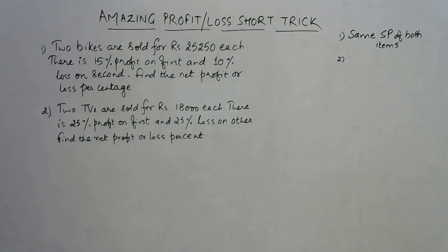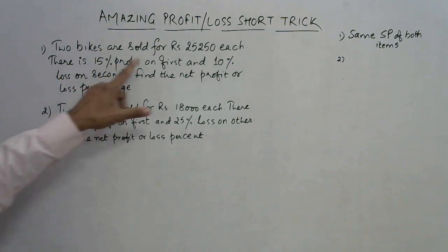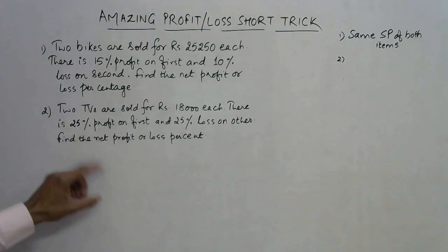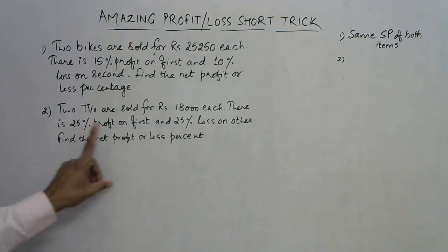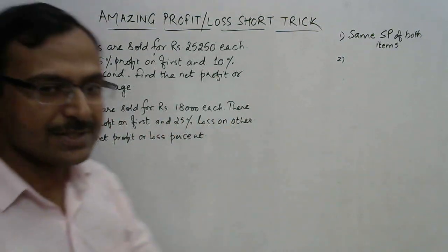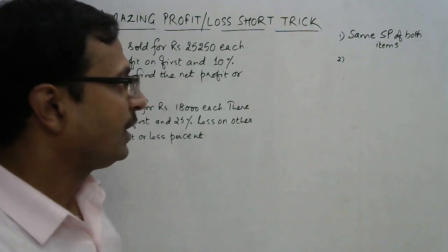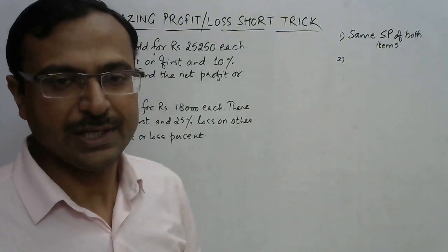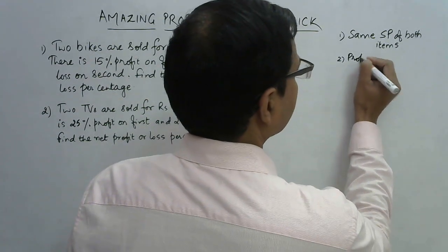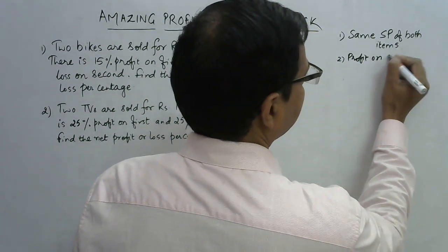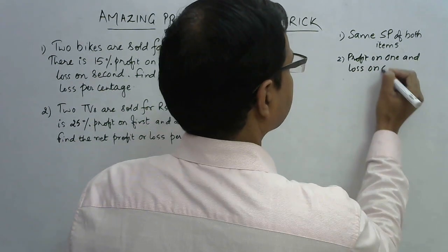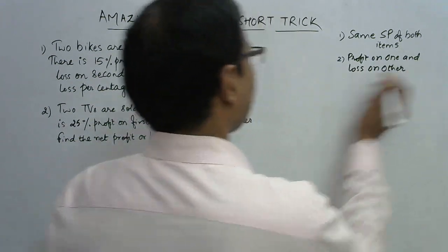Now let's study the questions to find what is common. In the first question there is 15% profit on the first item and 10% loss on the second. In the second question there is 25% profit on the first and 25% loss on the other. So the second condition is: there is profit on one item and loss on the other.